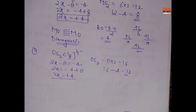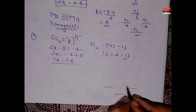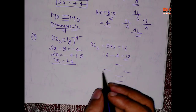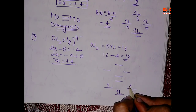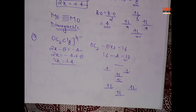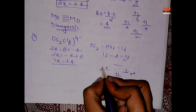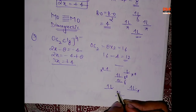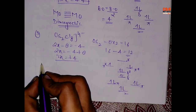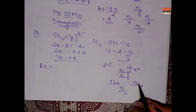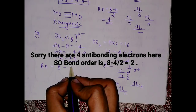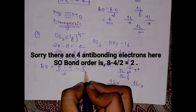Fill the 12 electrons into: sigma, pi, pi, delta, delta*, pi*, pi*, sigma*. Count: 1, 2, 3, 4, 5, 6, 7, 8, 9, 10, 11, 12 — placing into delta*, pi*, pi*, pi*. Bonding electrons = 8, anti-bonding = 2 (pi*, pi*). Bond order = (8 − 2) / 2 = 3.